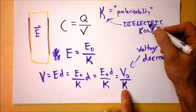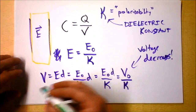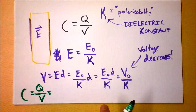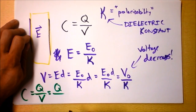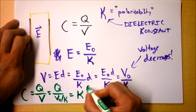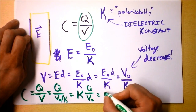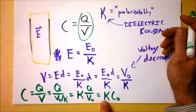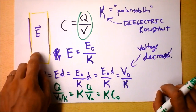The voltage decreases because kappa is greater than 1. And if the voltage decreases, let's find out what's happening to the capacitance. The capacitance is the charge on the capacitor divided by the voltage. But the voltage has decreased, so I'm dividing by something smaller. It's going to be Q divided by V-naught over kappa — a denominator of a denominator — which is just kappa times Q over V-naught. And Q over V-naught is the original capacitance. So we've got kappa times the capacitance before we added the dielectric. If your dielectric constant is 100, you've multiplied the capacitance of your capacitor by a factor of 100. The capacitance increases linearly with the dielectric constant.